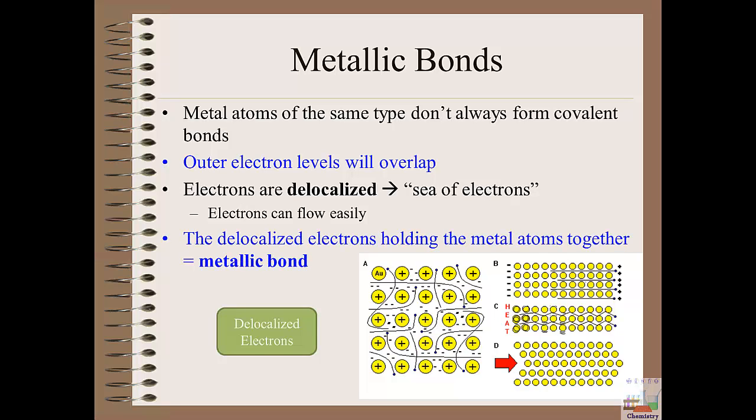And so the electrons are able to easily flow from one nucleus to another throughout the material. And this by its definition is what electrical current is, it's a flow of electrons. And so whenever you have metallic atoms that are being held together in this sea of electrons, this matrix of electrons if you will, this is what's referred to as a metallic bond.